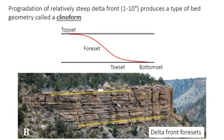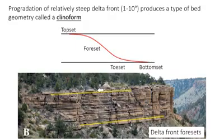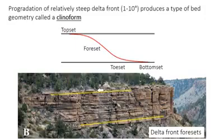In the real world, the actual dip is just a couple of degrees. In the photo here, the yellow lines show the horizontal bedding at the top and the base of the delta front. Between those lines, you can see very gently dipping fore-set beds that represent the part of these delta front clinoforms.